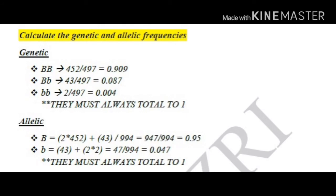Let's continue with the allelic frequencies. We have to divide them into capital B and small b. For B: (2 times 452) plus 43, all divided by 994 (which is 497 multiplied by 2). That is 947 divided by 994, which is 0.95. For small b: 43 plus (2 times 2) equals 47, divided by 994, which is 0.047. Always recall that they must always total to 1.